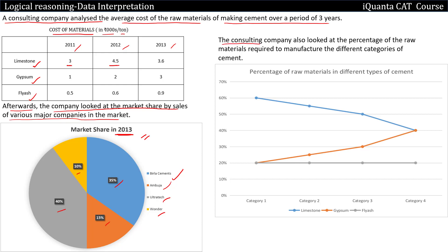The consulting company also looked at the percentage of raw materials required to manufacture the different categories of cement. We have category 1, category 2, category 3, category 4. The blue line represents limestone, orange represents gypsum, and the gray one represents fly ash.